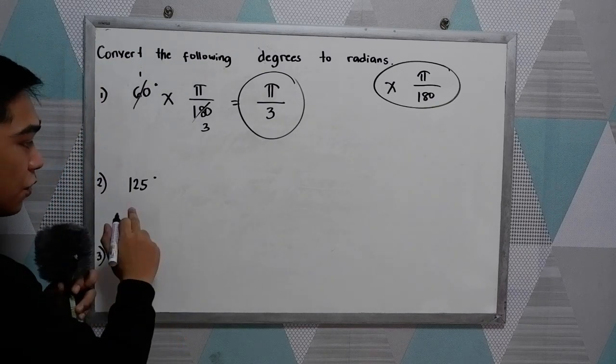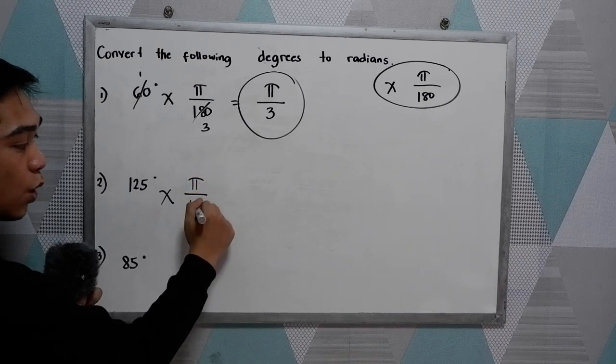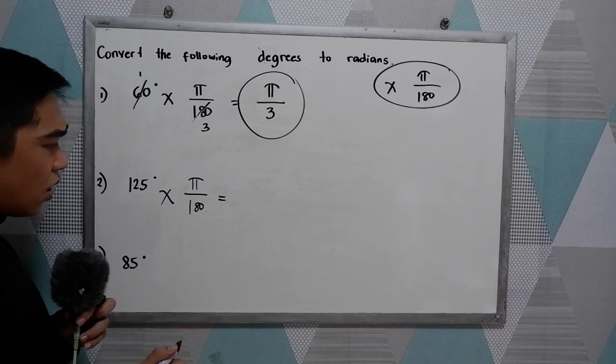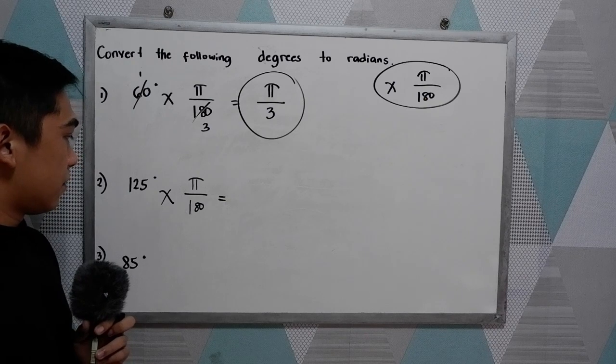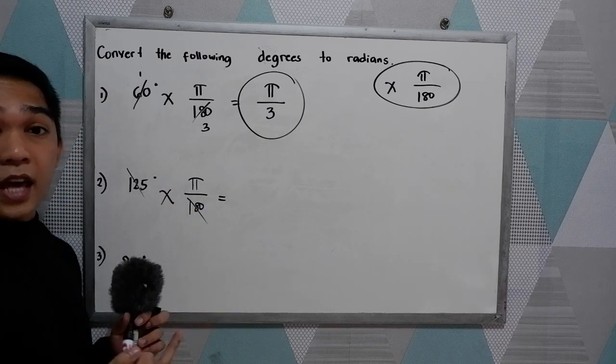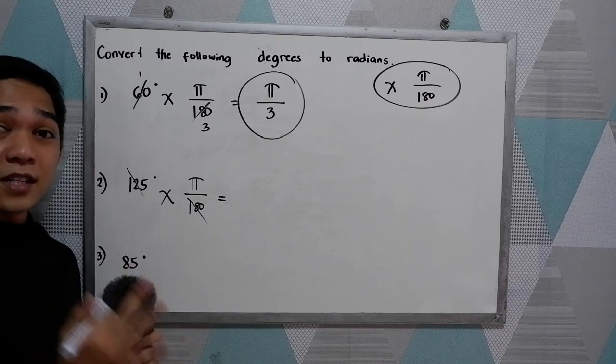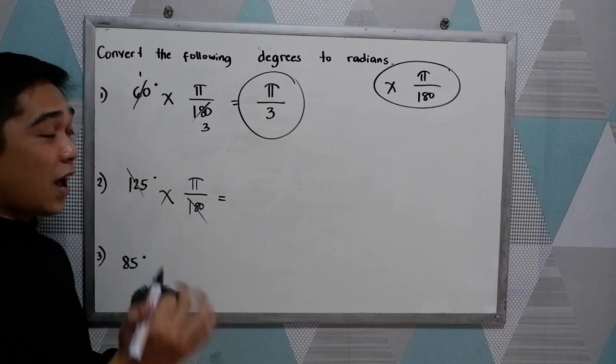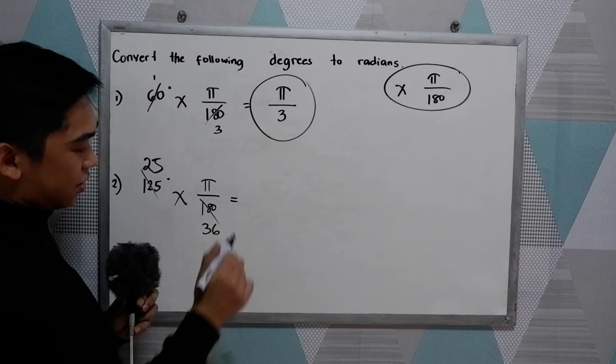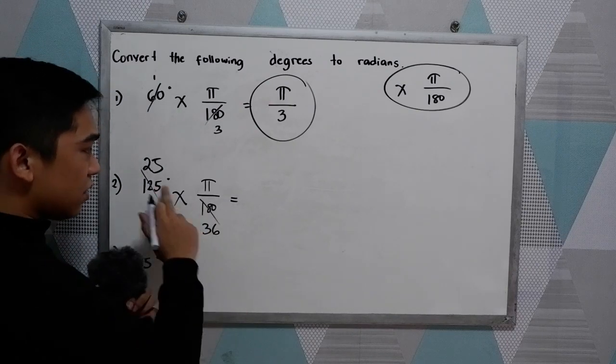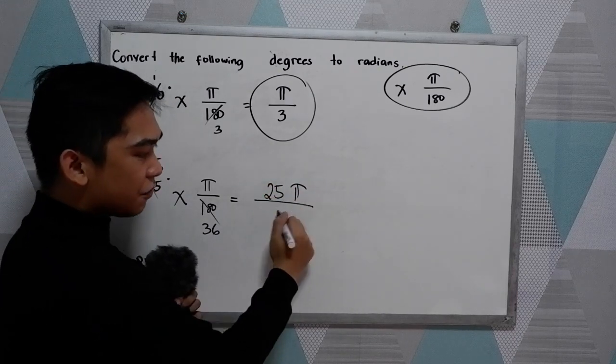The next one is convert 125 degrees to radian measure. So again, multiply it by pi over 180. So they are divisible by what number? Divisible by 5. So we have 125 and 180 divided by 5, that is 25 and 36. Can we still simplify 25 and 36? No. So our final answer is 25 pi over 36.